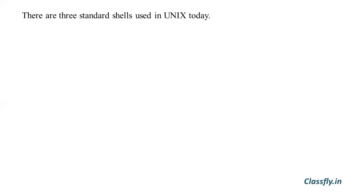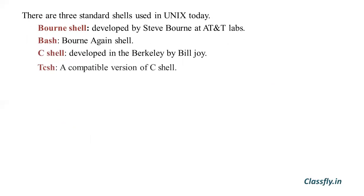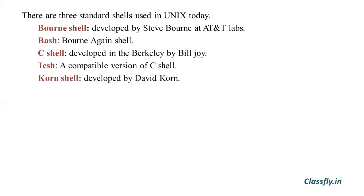There are three standard shells used in UNIX today: the Bourne shell, Bash, and the C shell. Others include tcsh and the Korn shell. The Bourne shell was developed by Steve Bourne at AT&T Labs — it is named after the scientist who developed it and is the oldest form of UNIX shell. Bash stands for 'Bourne Again Shell' and is an enhanced version of the Bourne shell.